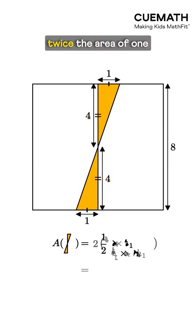The shaded area is twice the area of one triangle, one half times one times four, which comes out to four square centimeters.